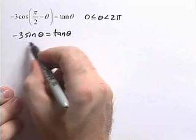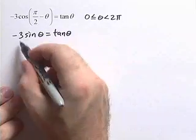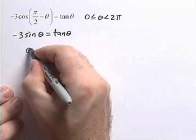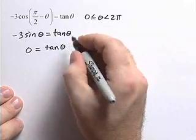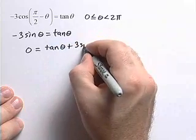Next we're going to bring the negative 3 sine theta to the other side, so we'll get a 0 on the left. We'll have 0 is equal to tangent of theta plus 3 sine theta.